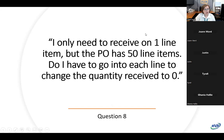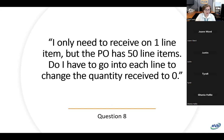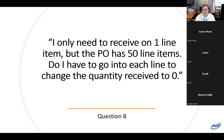Next question: 'I only need to receive on one line item but the PO has 50 line items — do I have to go into each and change the quantity received to zero?' No, they don't. They would use the trash can icon to delete any line items they are not receiving on, so they only see the lines they actually need to receive on and not all 50.